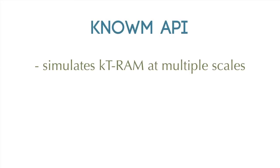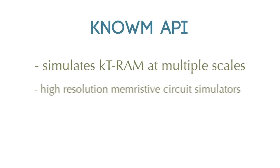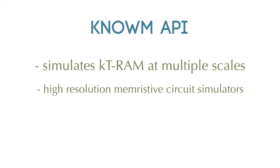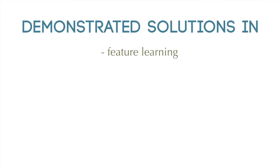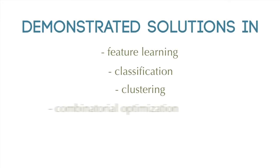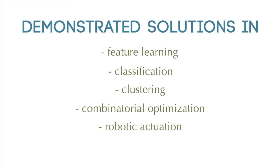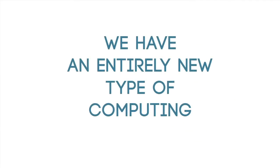What we've done is create the GNOME API — Application Programming Interface. The GNOME API allows us to simulate Thermodynamic RAM at multiple scales of resolution, from high-fidelity circuit simulations all the way to efficient digital simulations that let us solve practical problems on existing platforms. We're already doing this — we've solved problems in machine learning including feature learning, classification, clustering, combinatorial optimization, pattern recognition, robotic actuation, and universal reconfigurable logic. This gives us the basis for an entirely new type of computing.